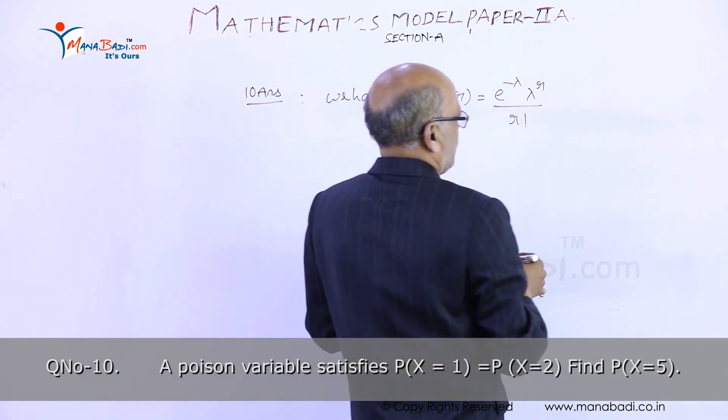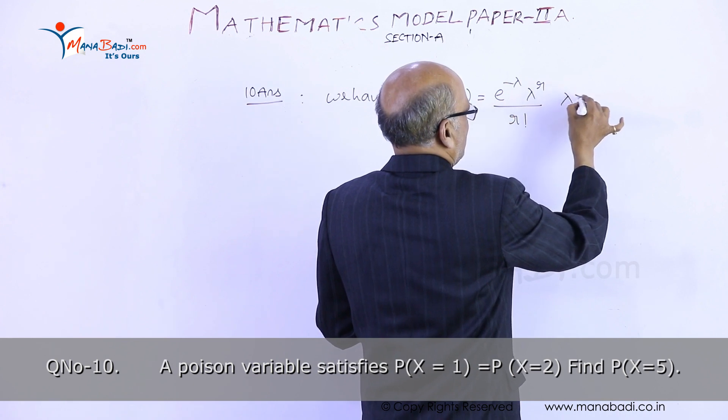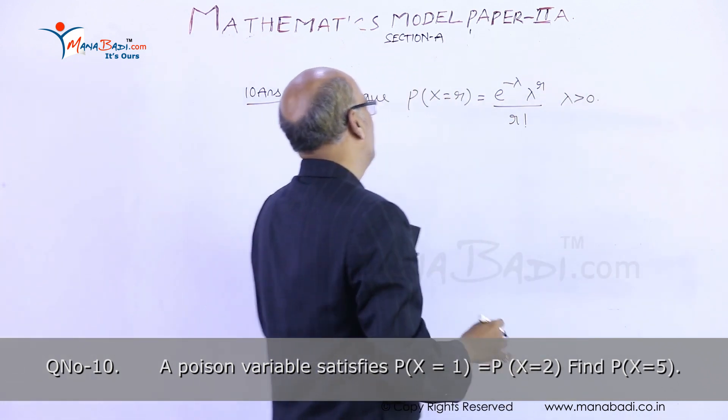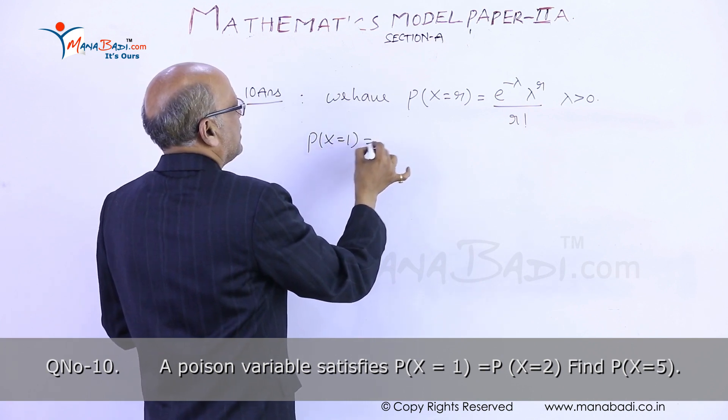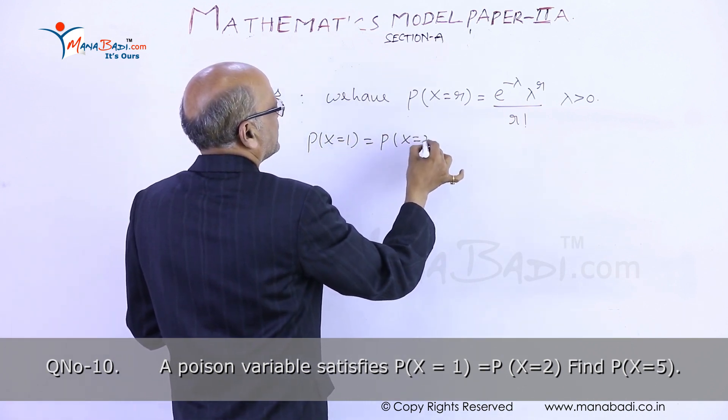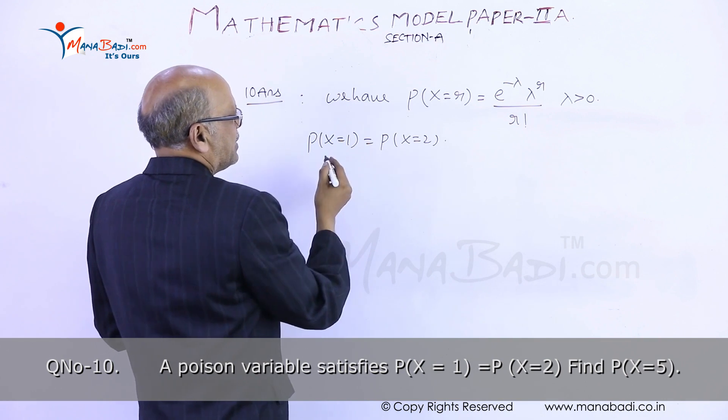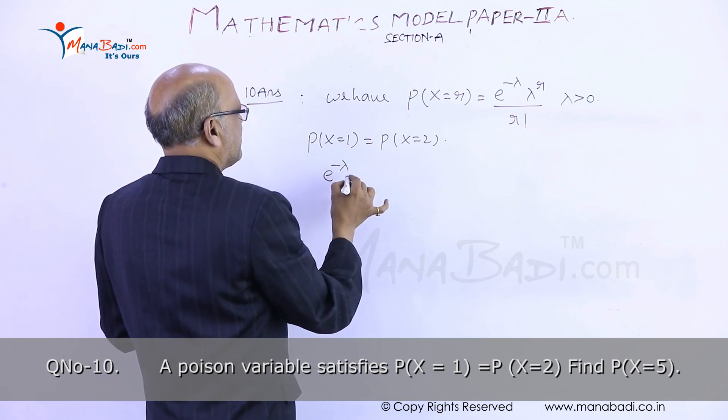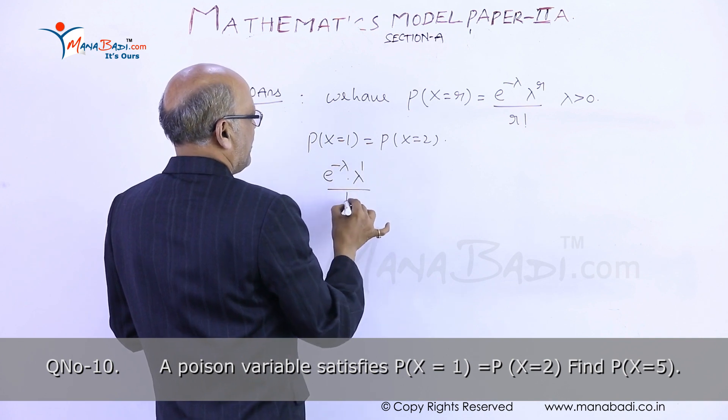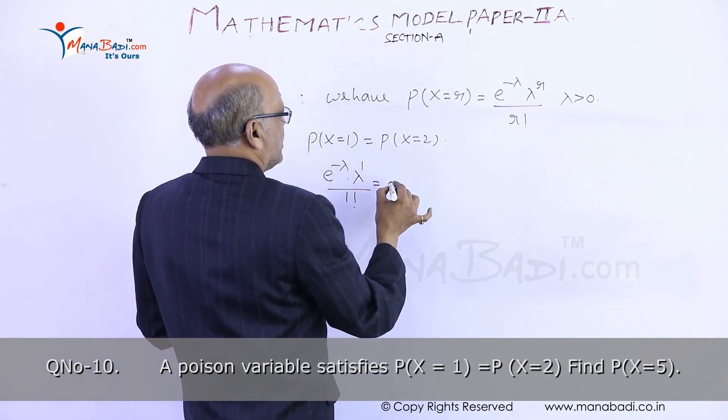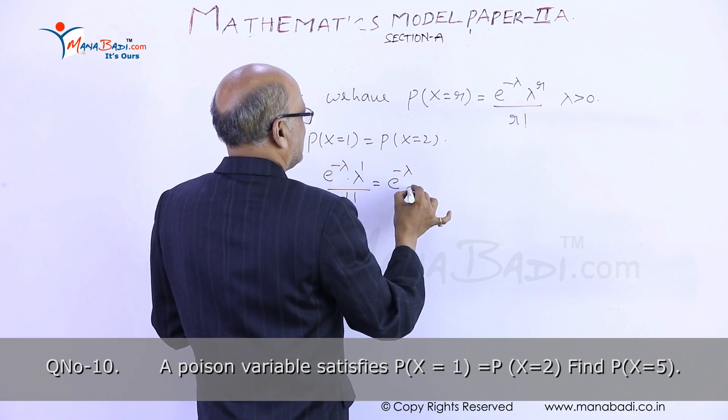Now it is given that P(x=1) equals P(x=2). That means e to the power of minus lambda times lambda to the power of 1 by 1 factorial equals e to the power of minus lambda times lambda squared by 2 factorial.